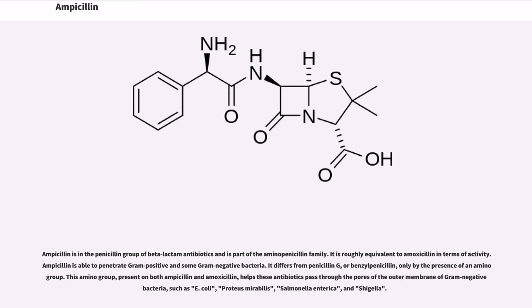This amino group, present on both ampicillin and amoxicillin, helps these antibiotics pass through the pores of the outer membrane of gram-negative bacteria, such as E. coli, Proteus mirabilis, Salmonella enterica, and Shigella.